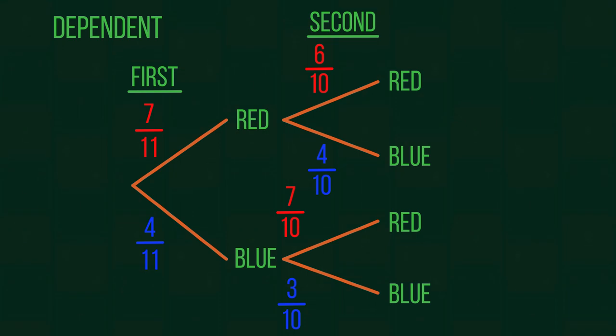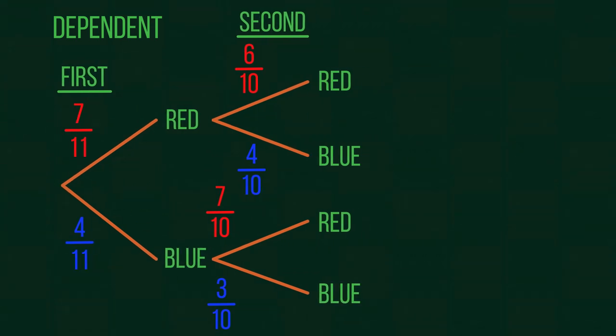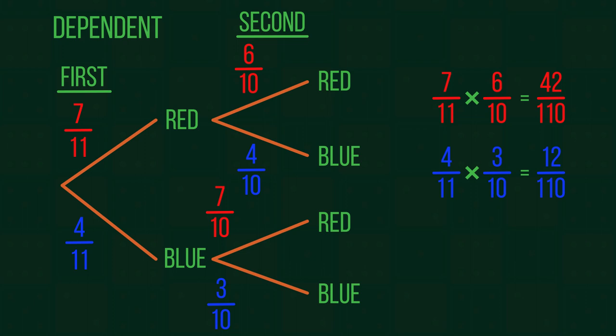And now we need to look at which of our outcomes work for our question. We need two colors the same, so we want the probabilities for red, red and blue, blue. We use the AND rule to find these values, multiplying them together. We then need our OR rule, because either red, red or blue, blue will work for us. Adding these values, we get 54 over 110, which we can simplify to 27 over 55. This is our final answer.